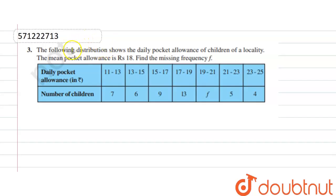Hello guys, the question is: the following distribution shows the daily pocket allowances of children of a locality. The mean of the pocket allowances is rupees 18. So mean given in the question is 18. We have to find the missing frequency, that is f. The interval starts at 11 to 13.